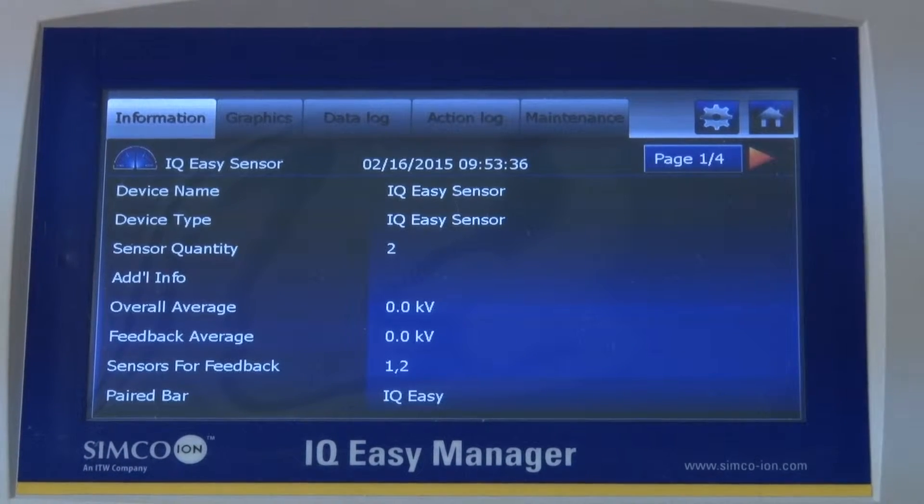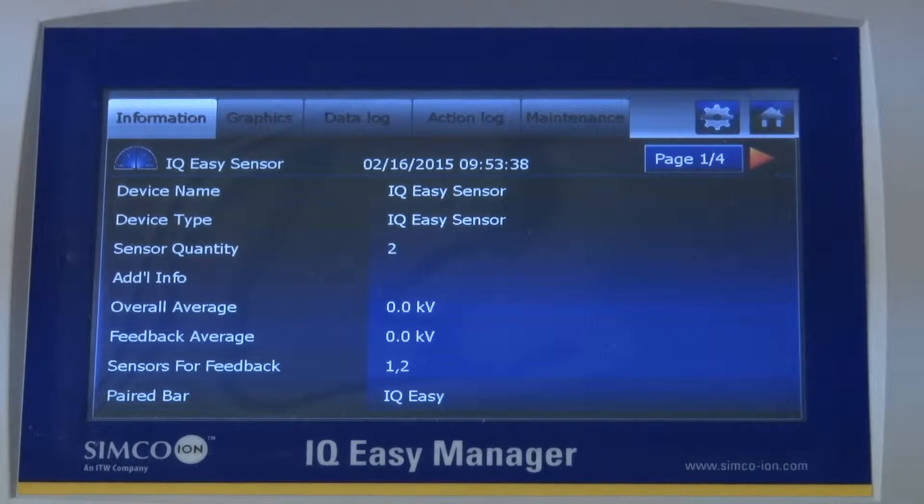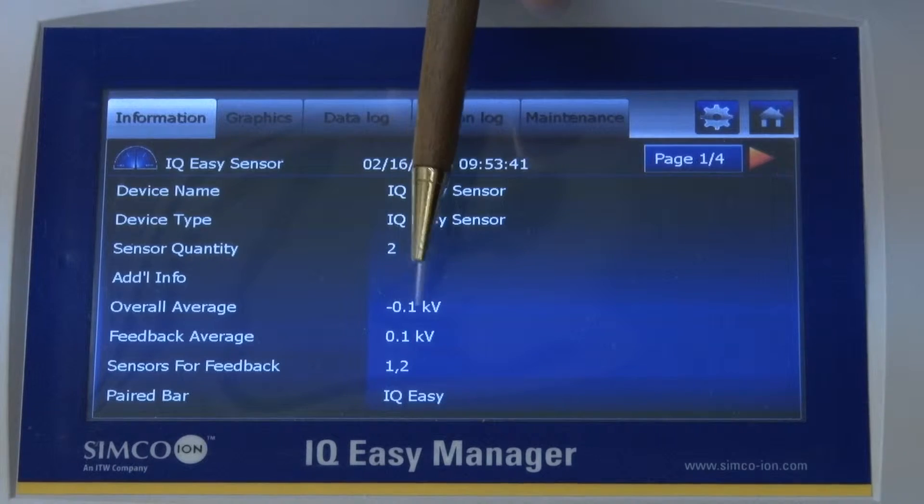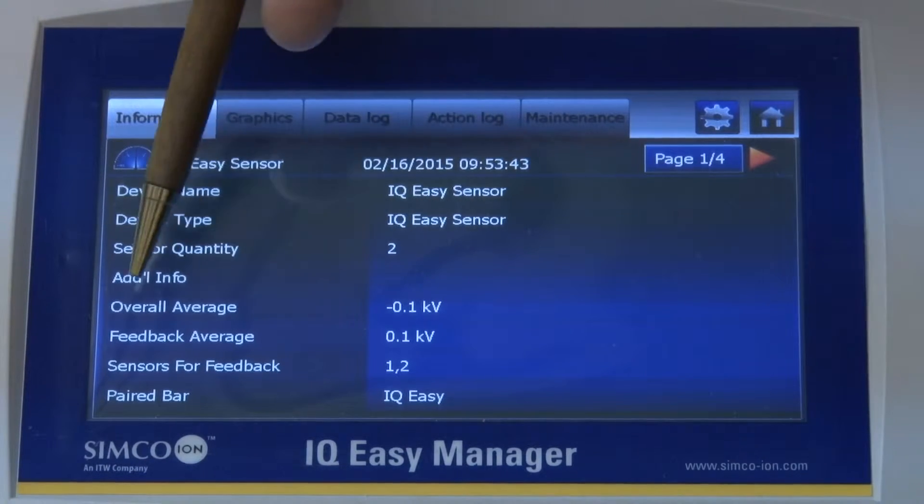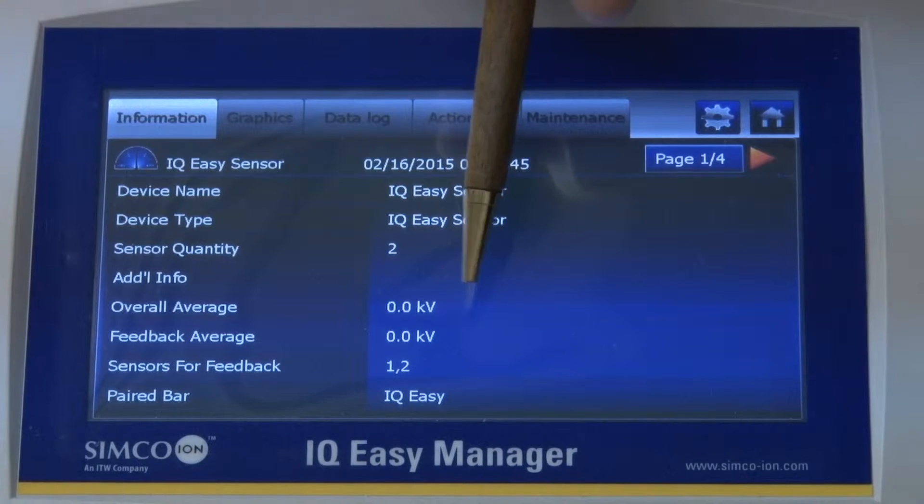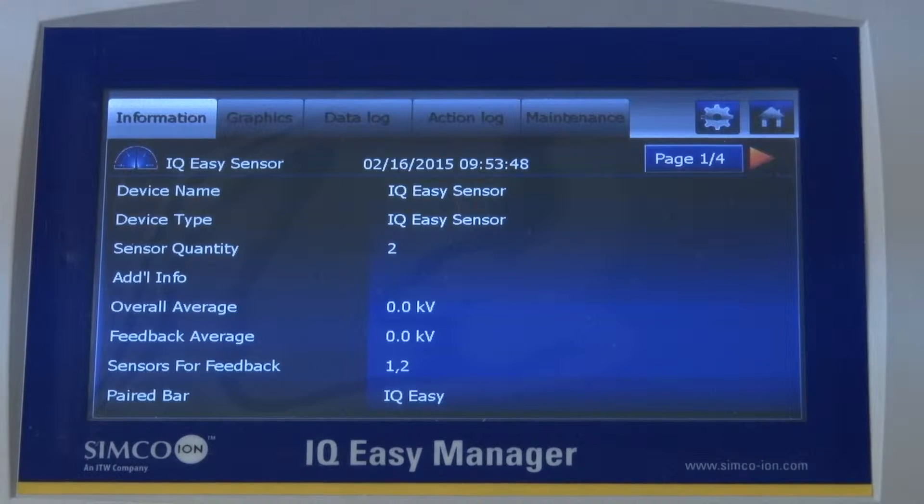Okay, we can see now that as we run, the closed-loop feedback system responds. And now this metric here, which is our closed-loop feedback average, these numbers are zero now. So that shows that the web has been completely neutralized to the best of the ability of the sensor bar in closed-loop feedback with the neutralizing bar.